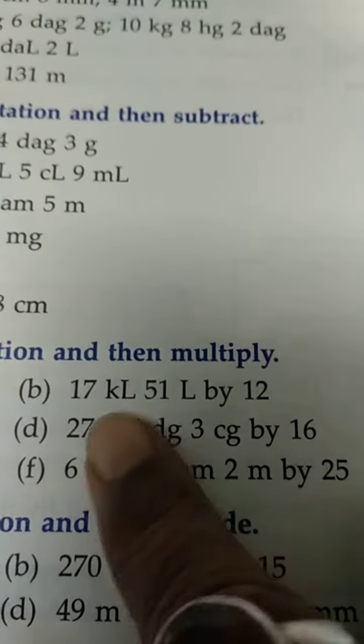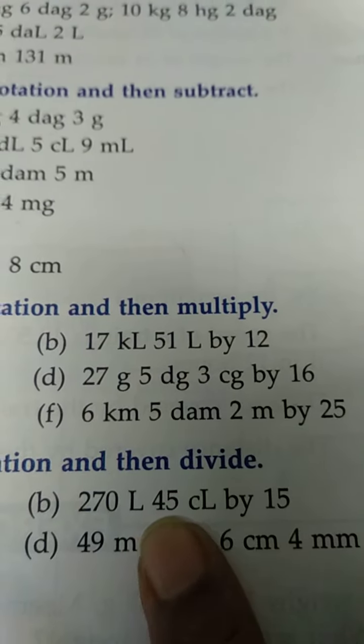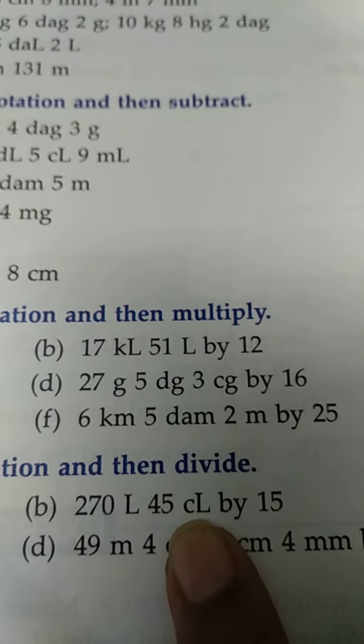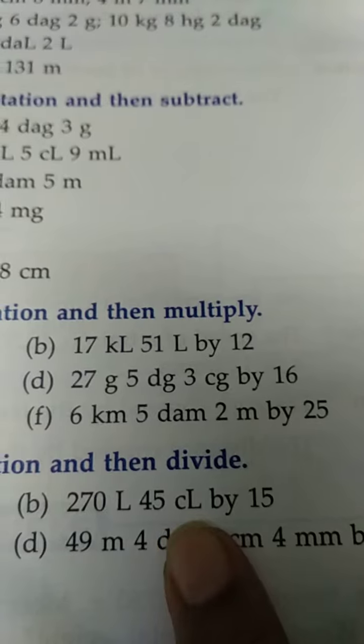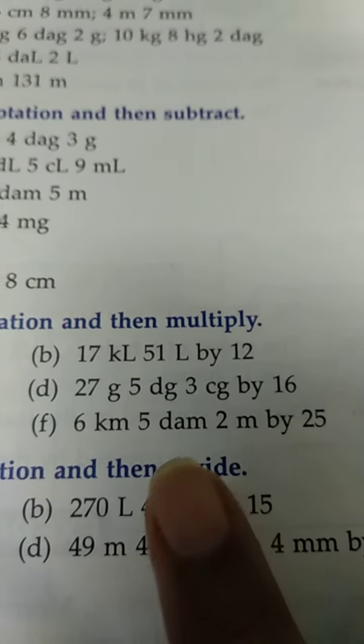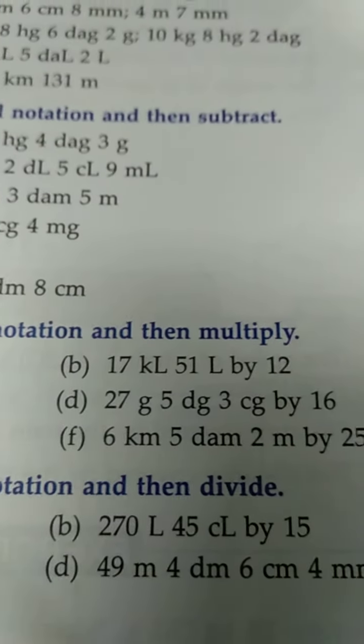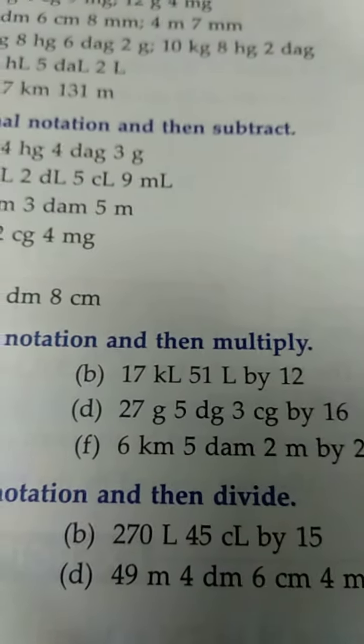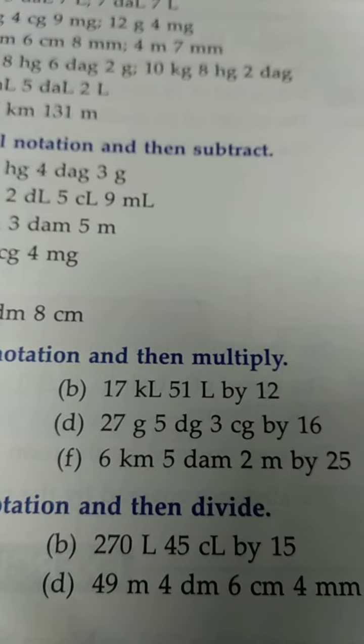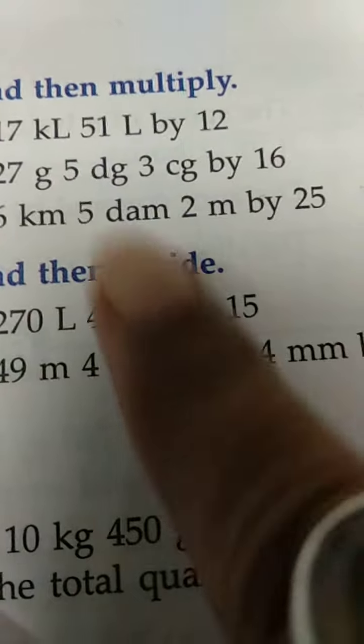Now next question, B: 270 liter 45 Cl. Look here, Cl - that means after it, L is not there, and as it is Cl, before it... one minute, let me make you understand.